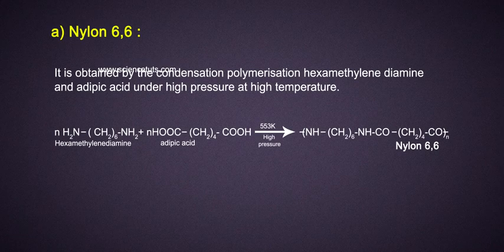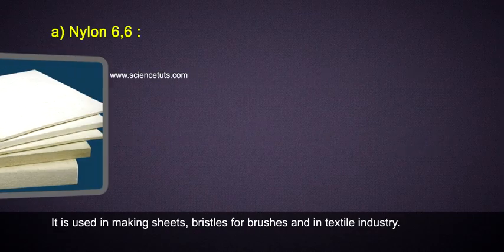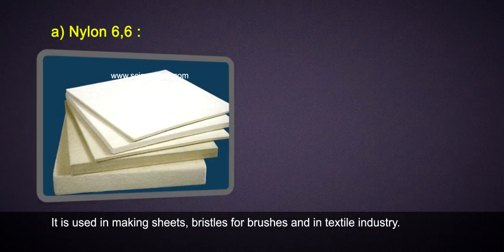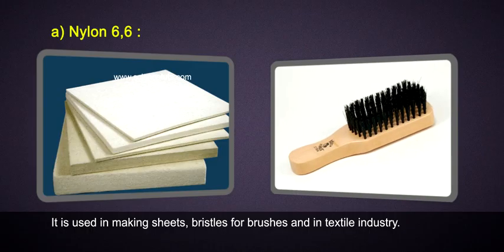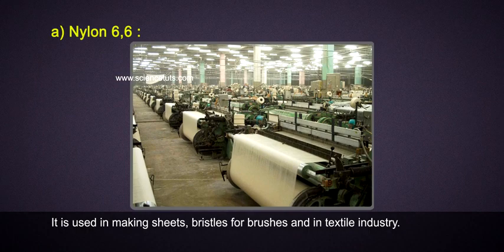Nylon 6-6: It is obtained by the condensation polymerization of hexamethylene diamine and adipic acid under high pressure at high temperature. It is used in making sheets and bristles for brushes in the textile industry.